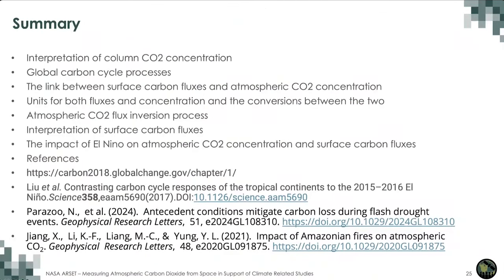In summary, we have talked about how to interpret column CO2 concentration observed by OCO2, the global carbon cycle processes, the link between surface carbon fluxes and atmospheric CO2 concentration, the units for both carbon fluxes and concentration, and conversions between the two. We also discussed the atmospheric CO2 flux inversion process and how to interpret prior and posterior fluxes. Finally, we covered how to interpret the impact of El Niño on atmospheric CO2 concentration and the surface carbon fluxes. There are a few references listed that I would highly encourage you to read after the training. Thank you.